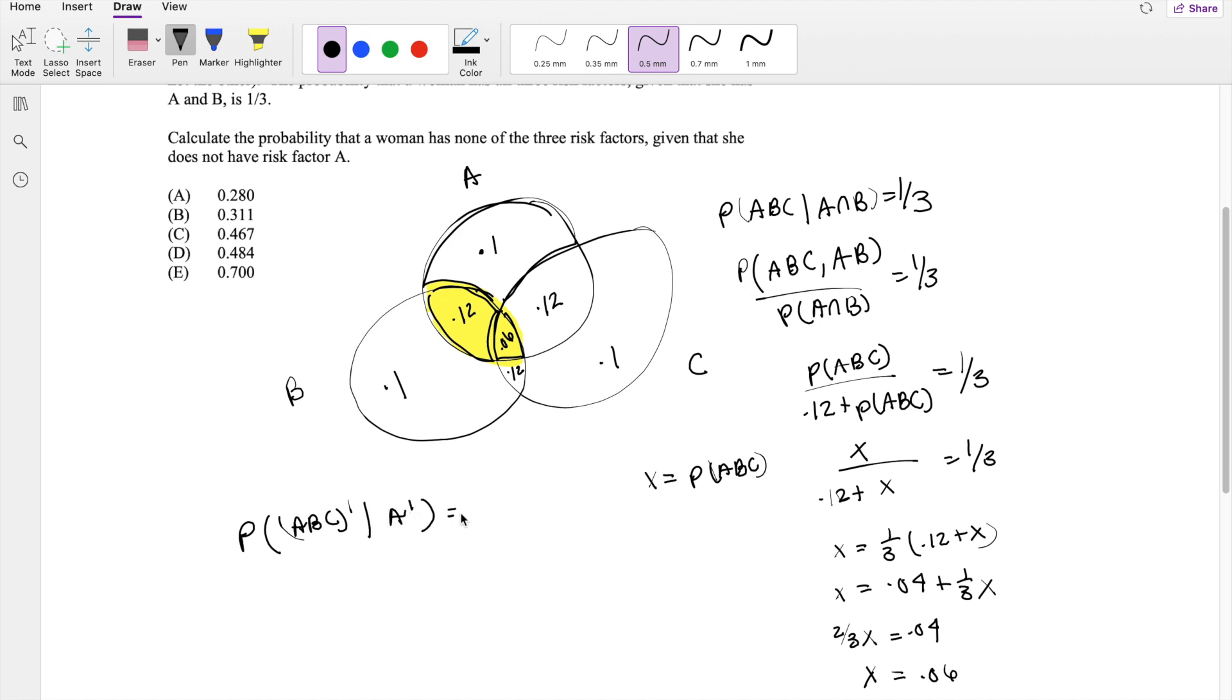Again, with the conditional probability formula, we can break this down into probability of not A, not B, and not C and not A, divided by the probability of not A.